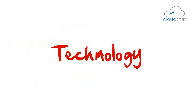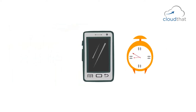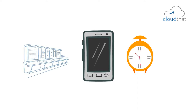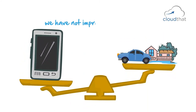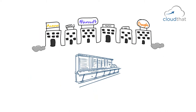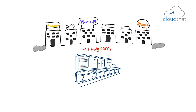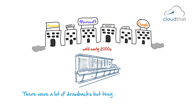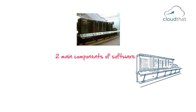Technology has moved so fast that phones today have millions of times faster clock speed and many millions of times more storage compared to these old machines. If you look at cars or buildings, we have not improved a million times in any of those areas. Most companies had their corporate IT infrastructure on mainframes until the early 2000s — mainframes were how companies installed and ran their applications.